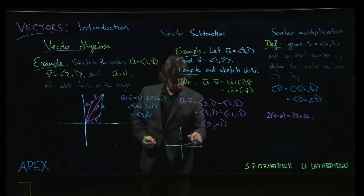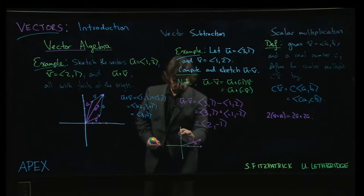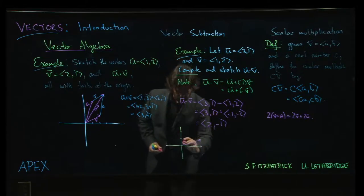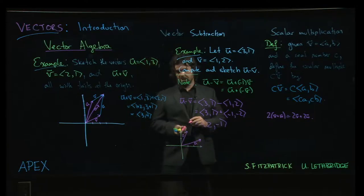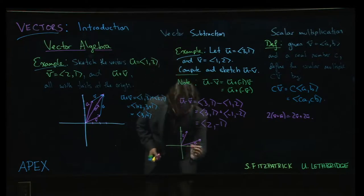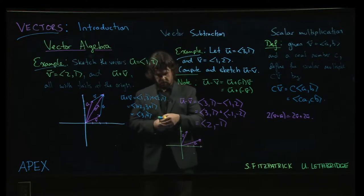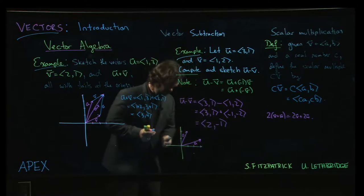v is 1, 2, over 1 up 2. And u minus v, so 2 and negative 1, it's here. So u minus v is here.